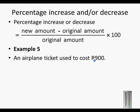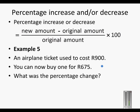An airplane ticket used to cost 900 rand, so this is the original amount. You can now buy one for 675 rand, so this is the new amount. What was the percentage change?